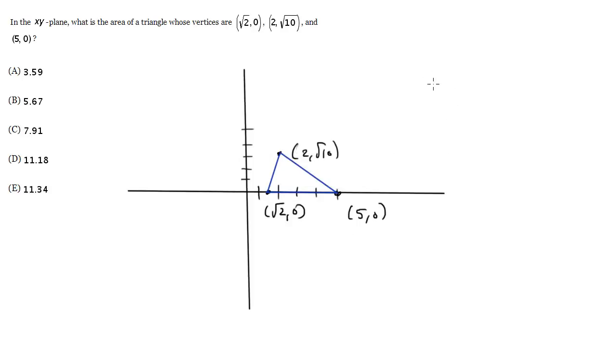So what is the equation for the area of a triangle? Well, it's area equals 1 half base times height. And luckily we have the base and the height. We can get it from this coordinate graph. What is the base? Well, the base is going to be the distance between these two points, which is just 5 minus square root of 2.